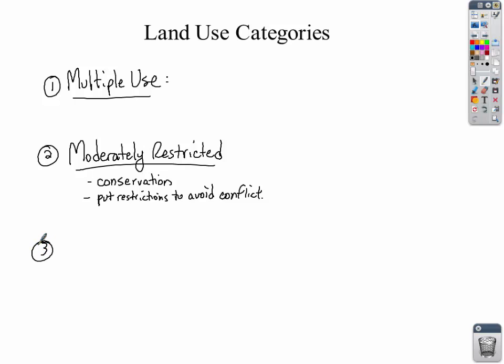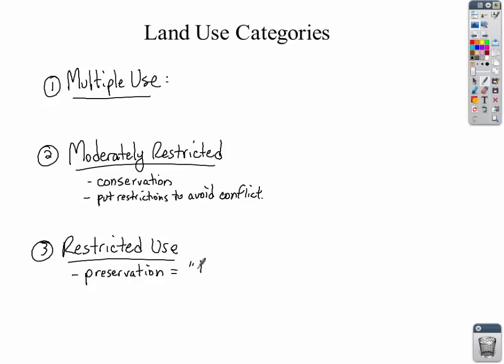A third classification is called restricted use. This operates under the idea of preservation, not just conservation — when we preserve something, we're basically saying 'don't touch.' Restricted use properties are typically very scenic, unique, maybe historic or cultural — basically labeled as too important to touch. You might be able to go on them, but with tremendous restrictions. Often you cannot build roads, limiting the amount of human influence. Keep these three land use categories in mind as we go through, because U.S. public lands all fall under one of them.